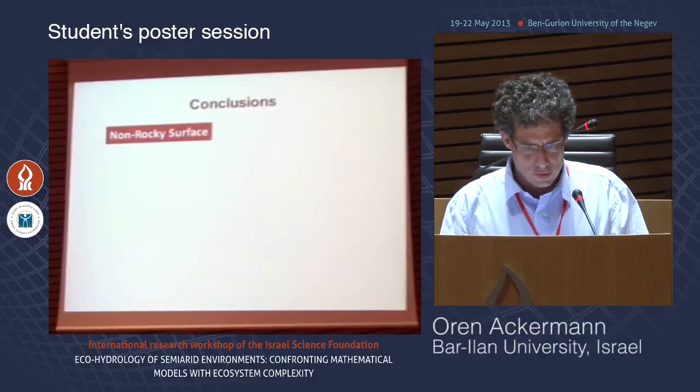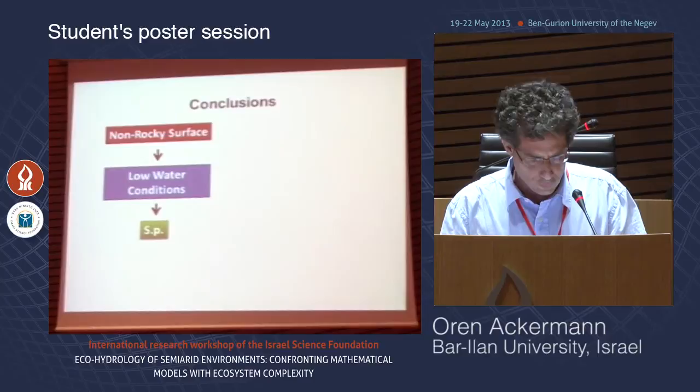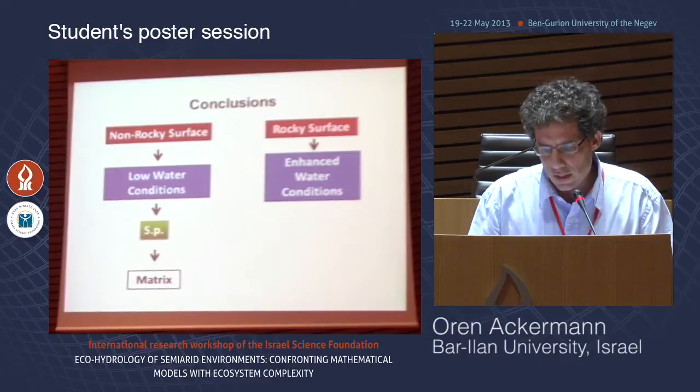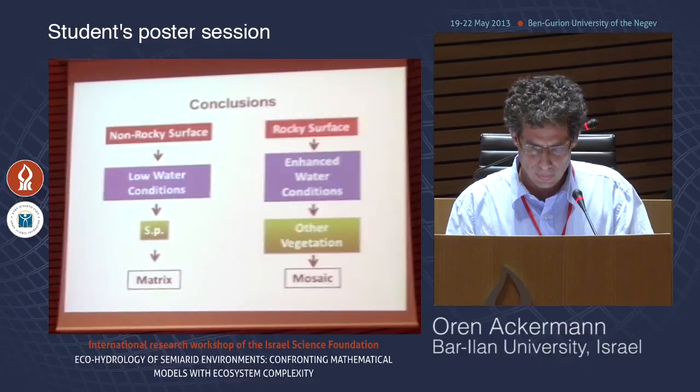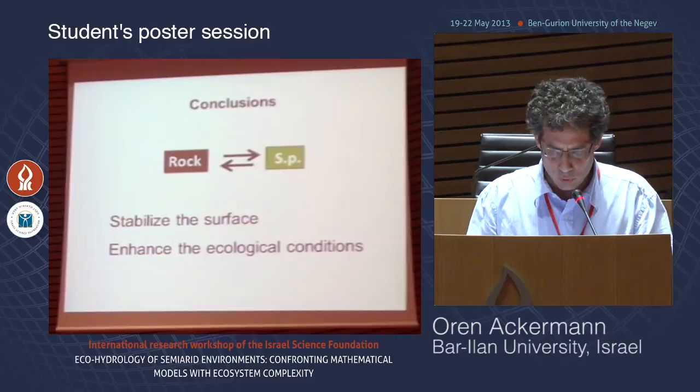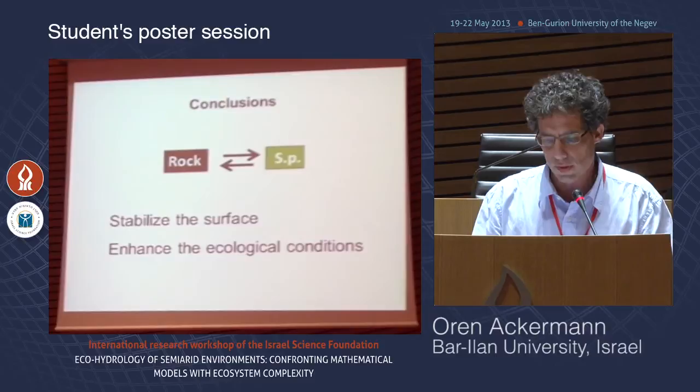In conclusion, the non-rocky surface has low water condition, which is sufficient for the establishment of SP, adapted to relatively drier conditions in a matrix pattern. The rocky surface has enhanced water condition, allowing establishment of vegetation less adapted to drier conditions in a mosaic pattern. Final conclusion: rock and SP are interchangeable surface components, as both stabilize the surface and enhance the ecological conditions.